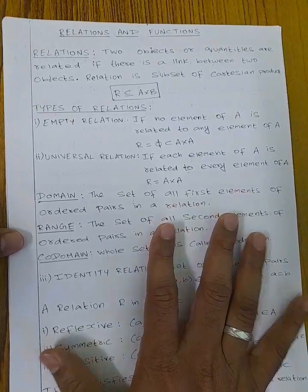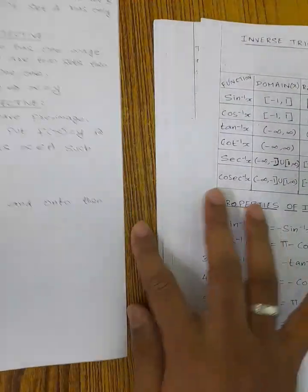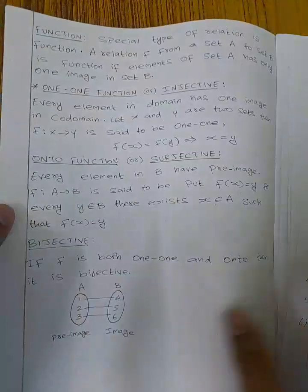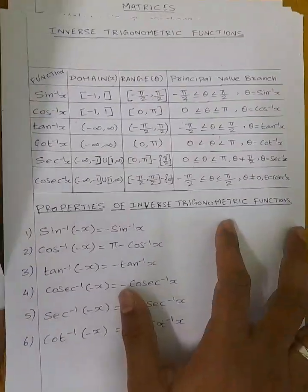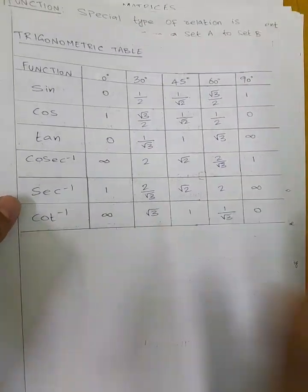I will tell you about the content. In relations and functions: types of relations, content on reflexive, symmetric, transitive, one-to-one, onto. Next, trigonometric functions: trigonometric table, properties of inverse trigonometric functions.